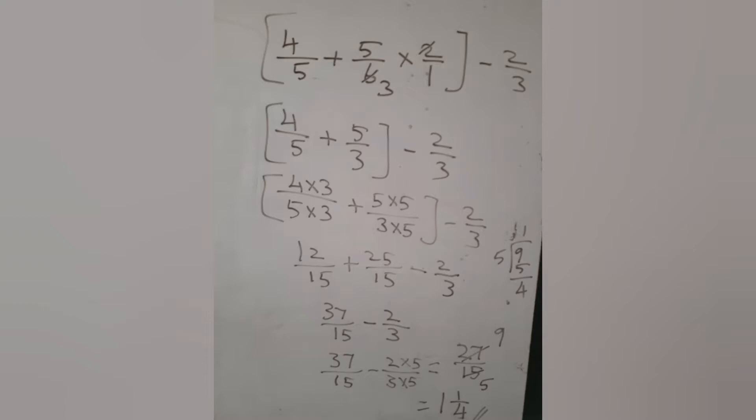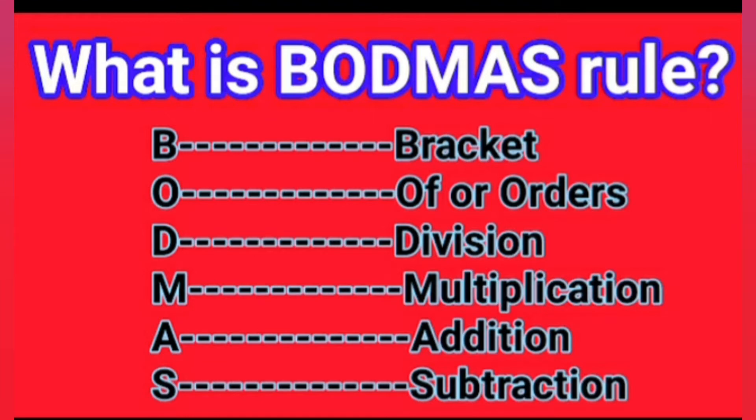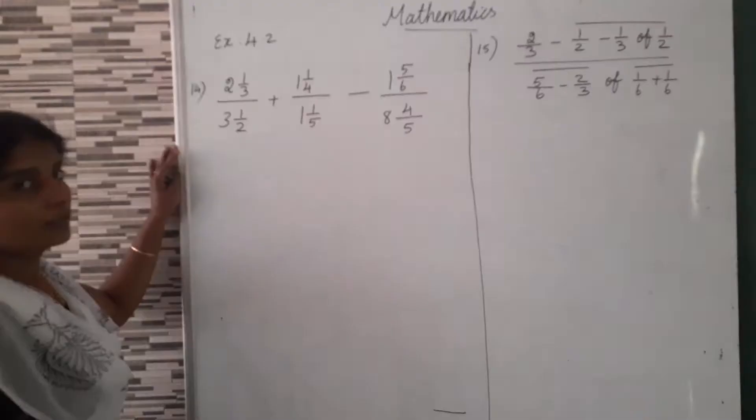That is, we can simplify using the 3 table: 9/5. Now we can convert into a proper mixed fraction. So we divide it. 9/5 equals 1 and 4/5, which is the answer.